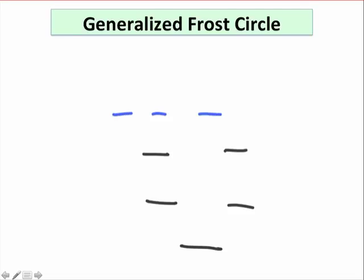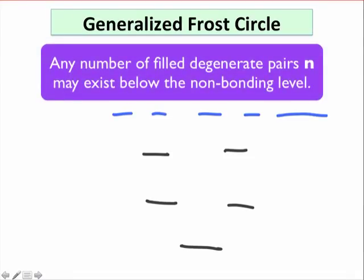We can generalize the frost circle, and notice that aromatic compounds will always possess two electrons at a bottom-most energy level, the down vertex of the polygon, followed by groups of four in pairs of degenerate levels up to the non-bonding line.